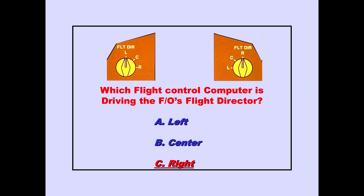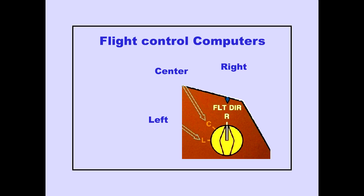Answer C is correct. The source selector determines which flight control computer operates the flight director. Since the first officer's selector is positioned right, the right flight control computer is driving the first officer's flight director.